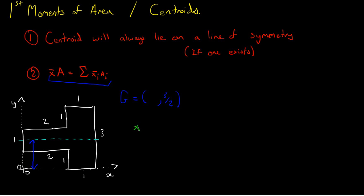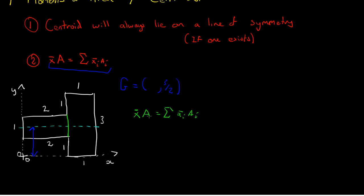So we write it out. x-bar, which is the x-coordinate for the centroid of the shape, times the area of the whole shape, is equal to the sum of the elemental centroid coordinates times the elemental areas. Now if we consider the shape as two rectangles rather than a T-shaped cross section — I've cut there using that green line — the area of the whole shape equals the area of the first rectangle plus the area of the second rectangle. The area of the first rectangle is 1 times 3, which is 3, and the area of the second is 1 times 2, which is 2. So the total area is 5, and on the left-hand side we can write 5 x-bar.